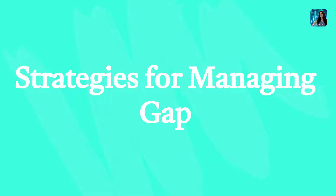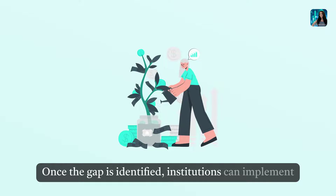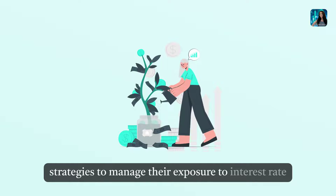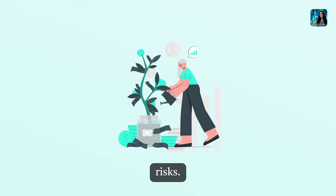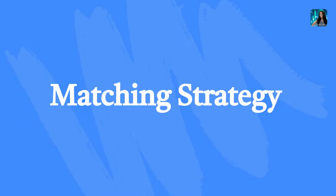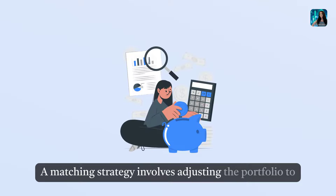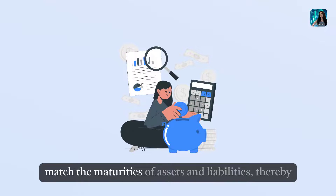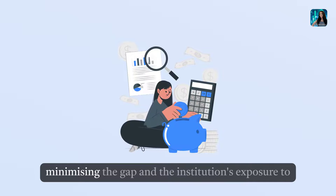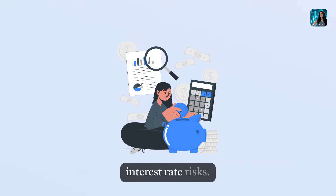Strategies for Managing Gap. Once the gap is identified, institutions can implement strategies to manage their exposure to interest rate risks. A matching strategy involves adjusting the portfolio to match the maturities of assets and liabilities, thereby minimizing the gap and the institution's exposure to interest rate risks.